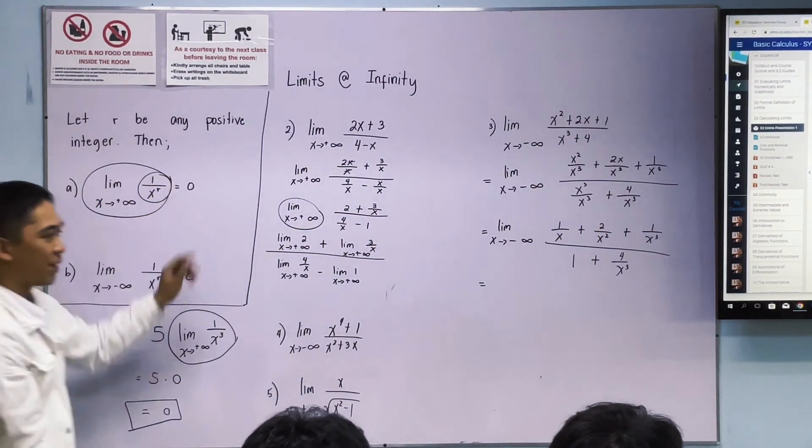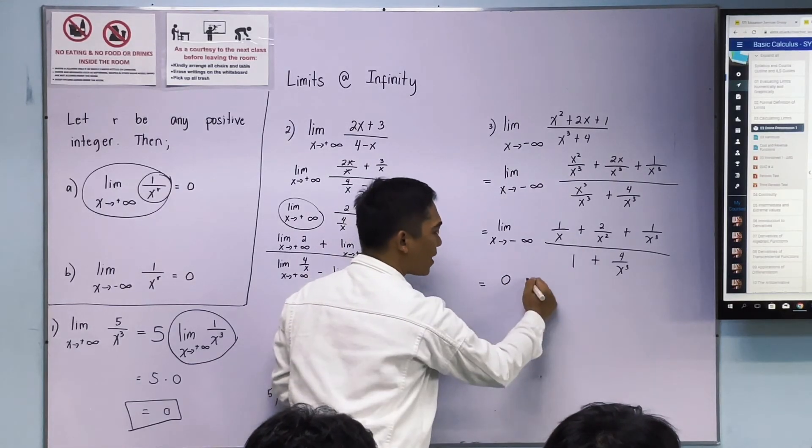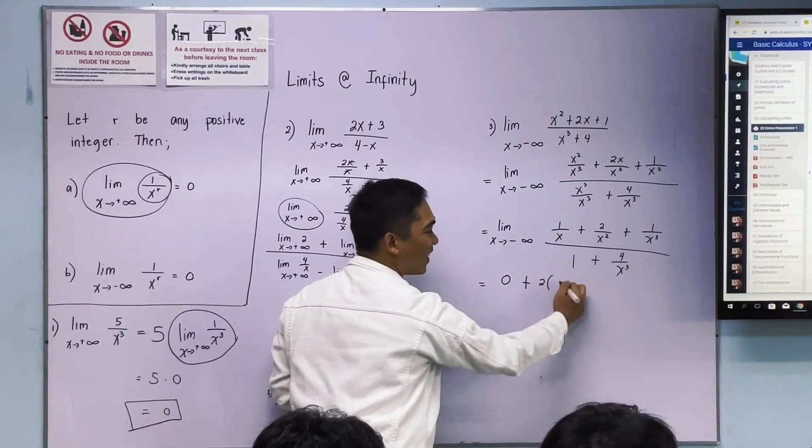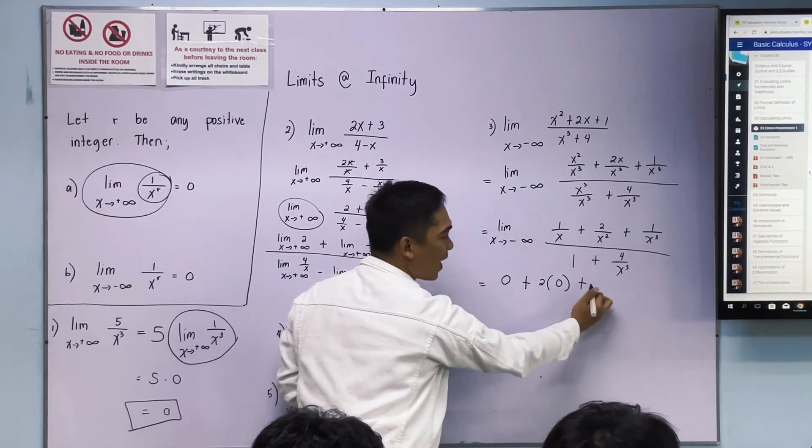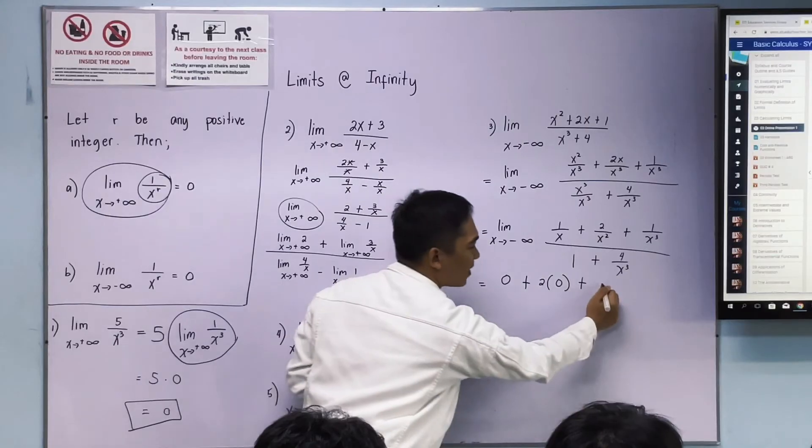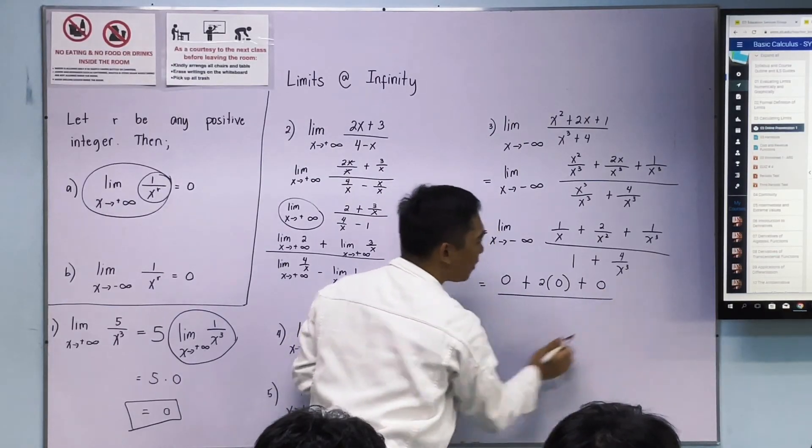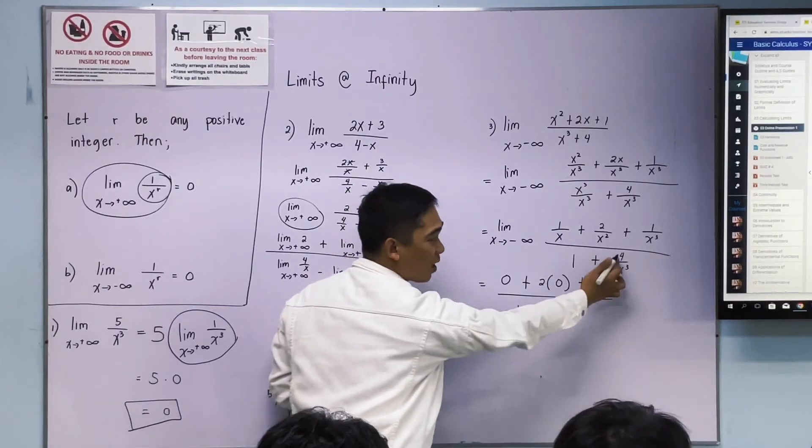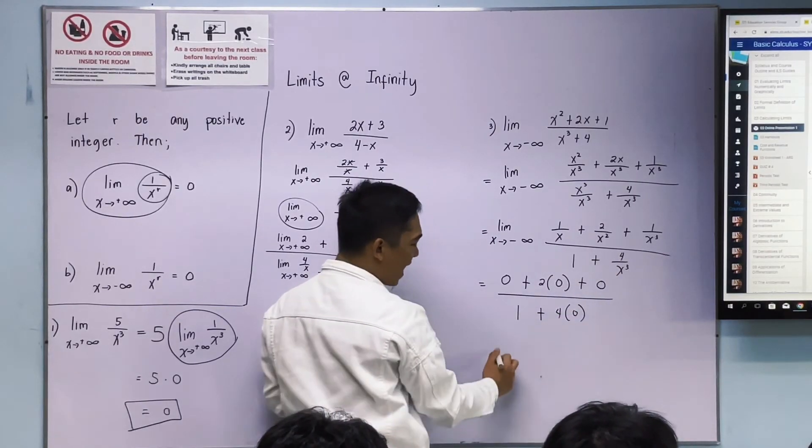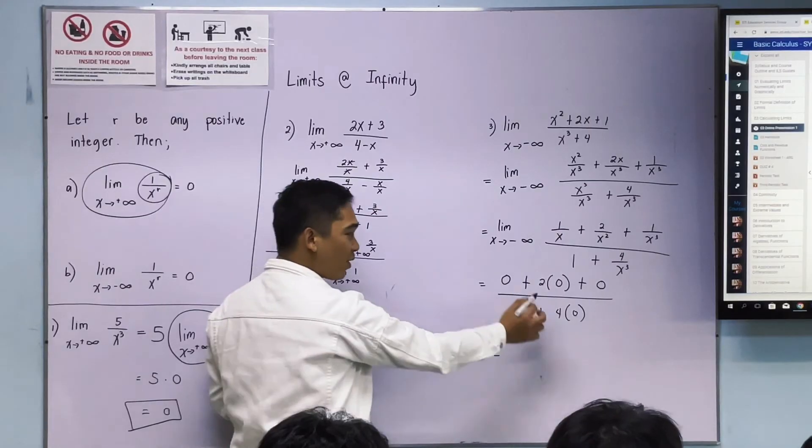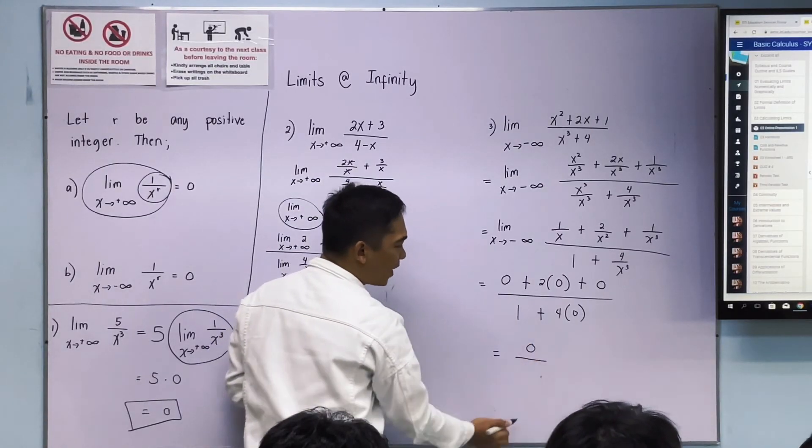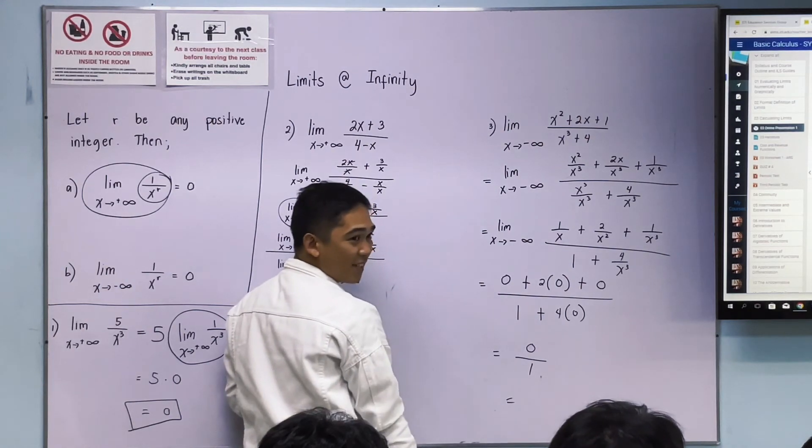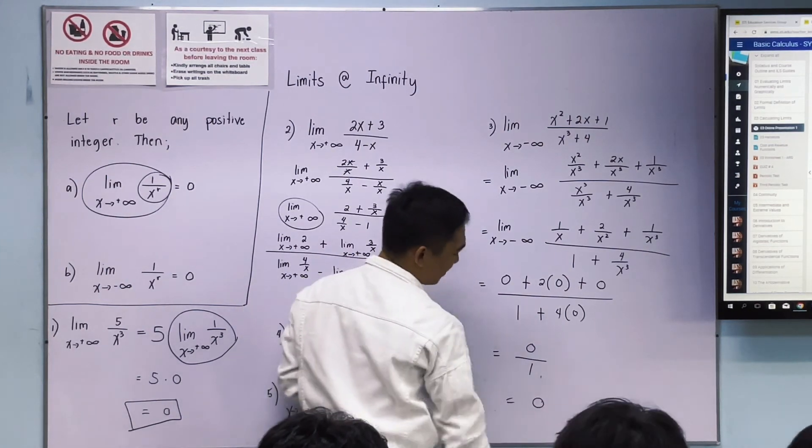Should we distribute this to each term or shortcut? Okay, good. If you want to shortcut, that's okay. According to this theorem, that is equal to zero, plus 2 times zero, plus this: zero over 1 plus 4 times this theorem. So zero over what? Zero over 1 is zero. That's correct.